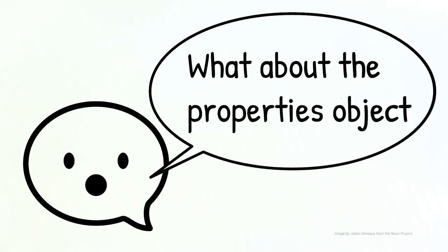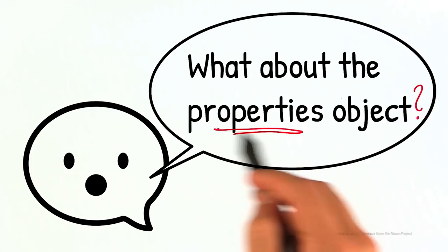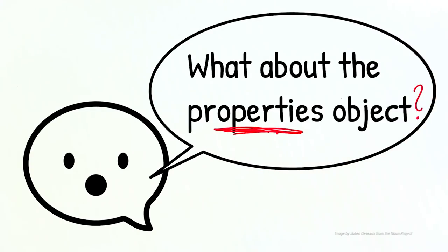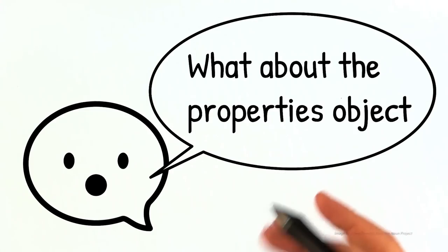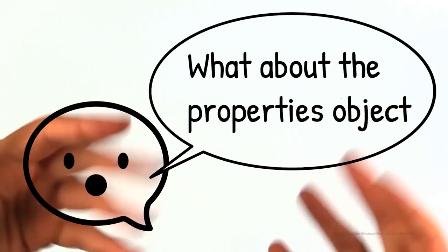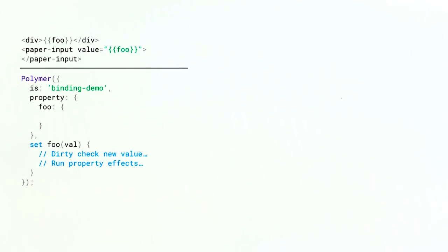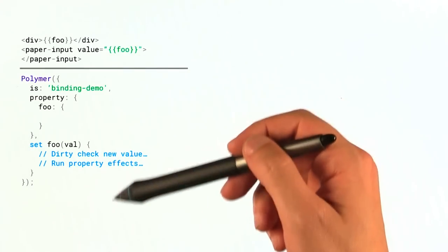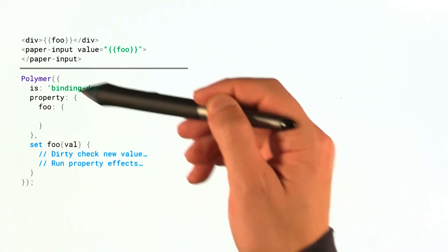Now I'm sure some of you are seeing this and saying, well, what about the properties object? Because I know this is also part of the mix, right? Like, how does this thing get involved? Well, the properties object basically allows you to add what I think of as sort of like metadata to your property setter, if you will.